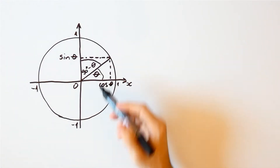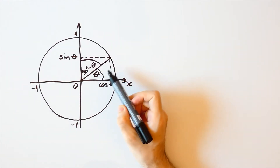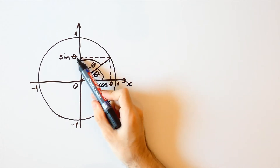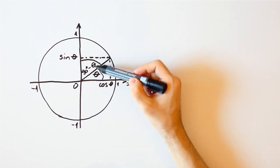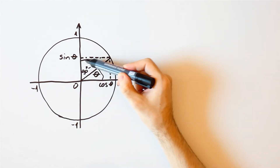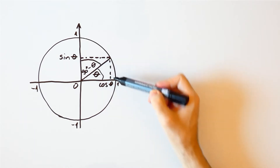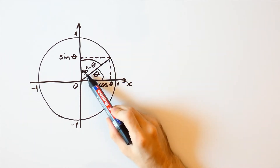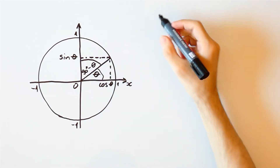Now for any angle theta, the sine of theta is equal to the cosine of 90 degrees minus theta, and the cosine of theta is equal to the sine of 90 degrees minus theta.